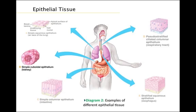Simple cuboidal epithelium has cells with a relatively large amount of cytoplasm, making it possible for secretion or absorption of material. It can be found forming a tube in the kidney, and we also find this type of tissue in our glands.